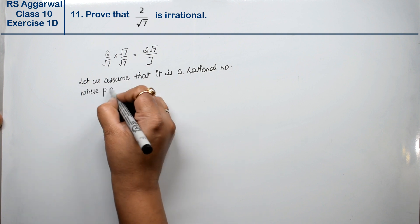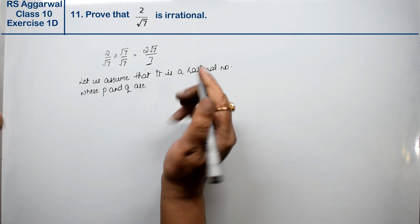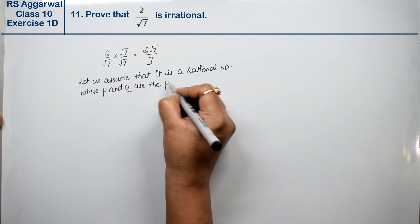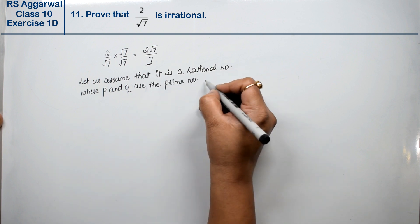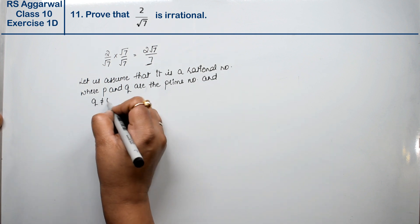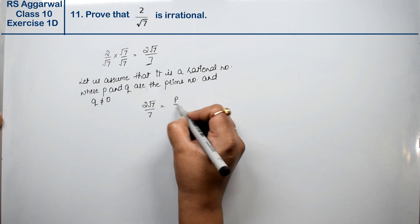Where p and q are integers, and q is not equal to 0. So we have 2 root 7 upon 7 equals p upon q.